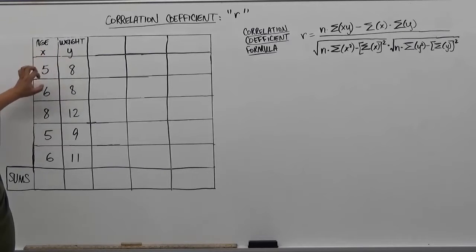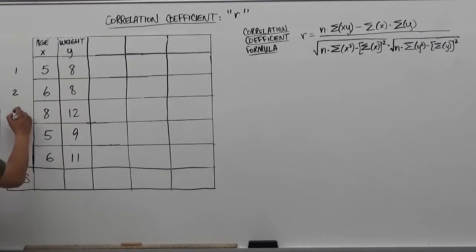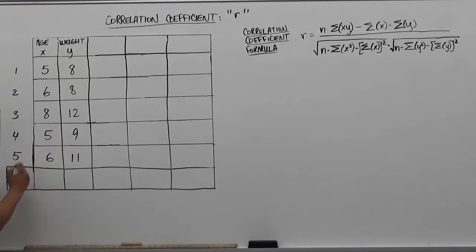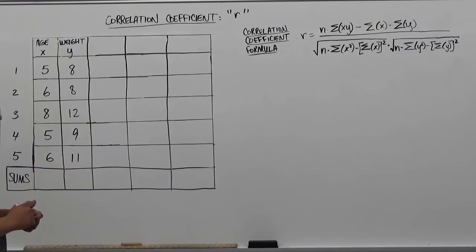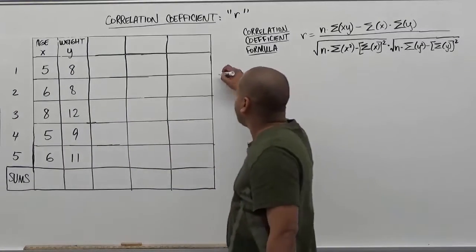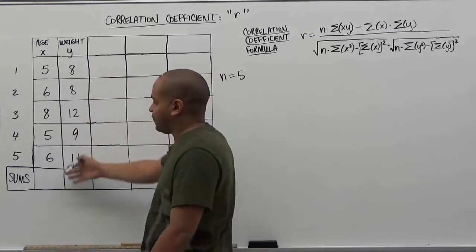A kid of the age of five weighs eight kilograms for the first sample. In our second sample, we have a child of six years of age weighing eight kilograms. Our third sample shows a child of eight years of age weighing 12 kilograms, while our fourth child is age five with a weight of nine kilograms. Our final sample shows a child of age six with a weight of 11 kilograms. The number of samples, which we'll call n, is going to be five for our five sample pairs.